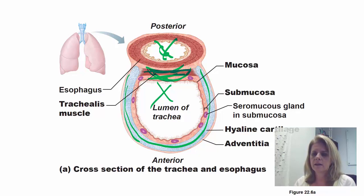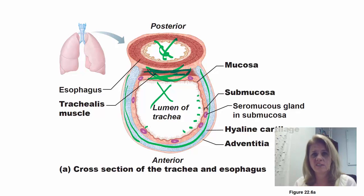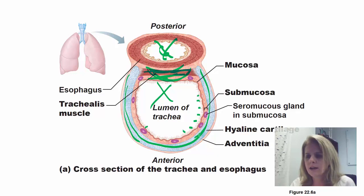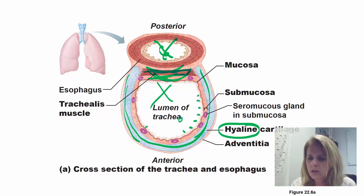If you look at the lumen of the trachea — lumen being the inside of the tube — you will see hairs, little cilia. As you breathe things in, there's a lot of mucus that catches dust and particles. The cilia constantly sweep that material up the trachea, and then you swallow it down your esophagus to get rid of it. The cartilaginous rings are made of hyaline cartilage — not elastic cartilage, not fibrocartilage, but hyaline cartilage.